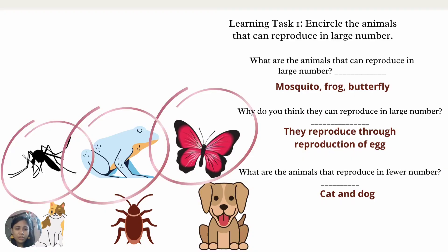And these are the answers. The animals that can reproduce in large numbers are mosquito, frog, and butterfly. They reproduce in large numbers because they reproduce through the production of eggs. The animals that reproduce in fewer numbers are cat and dog.